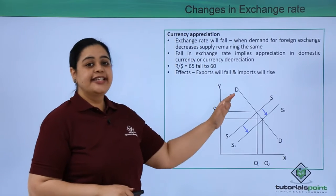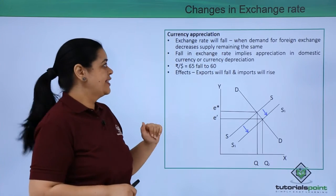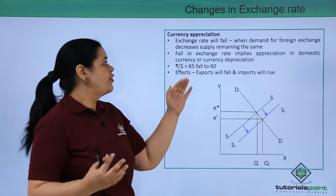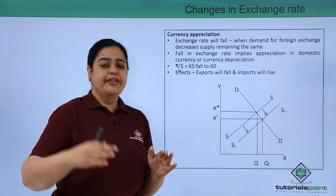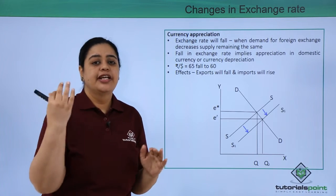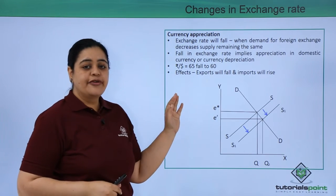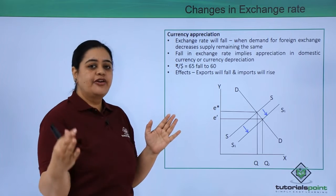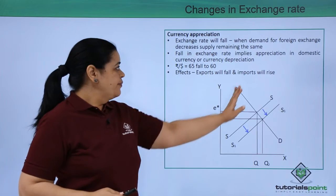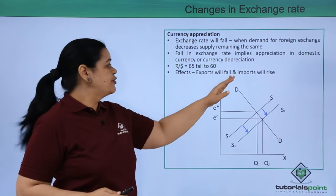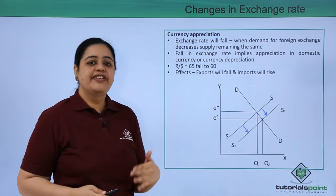When there is a currency appreciation, the exchange rate will start falling. What does that mean? The demand for foreign exchange would decrease but the supply would remain. People would be demanding lesser of US dollars but the supply of US dollars would remain the same. So the currency, which was trading at US dollar equal to 65 rupees, will come down to 60 rupees. That would result in exports becoming costlier, so they will fall, and imports becoming cheaper, so they will rise.